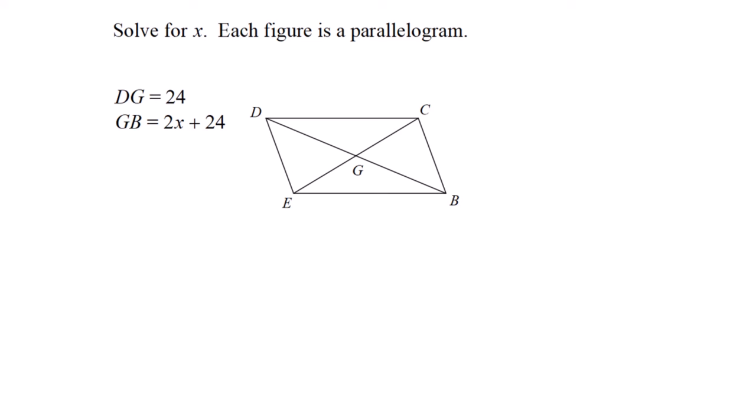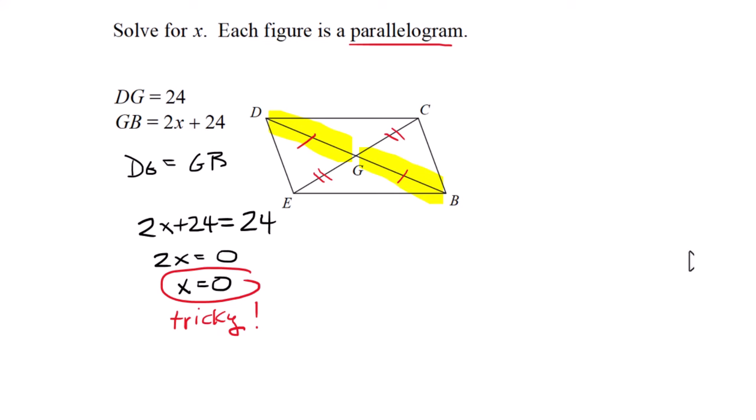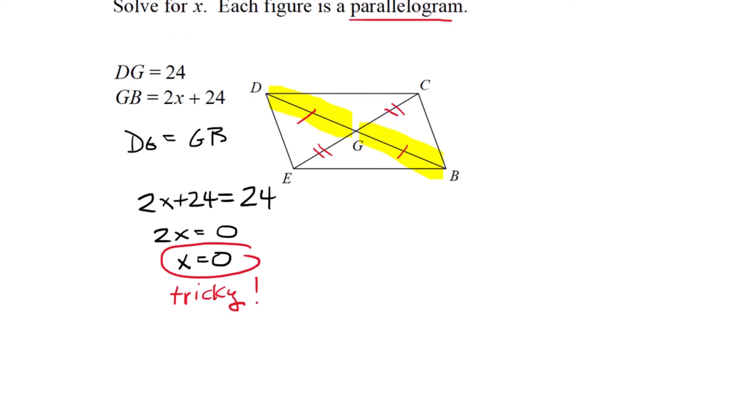In parallelograms, the diagonals bisect each other. They won't be the same length, but they cut each other in half. DG equals 24 and GB equals 2x plus 24. Since they're equal, 2x plus 24 equals 24. Subtract 24, 2x equals zero, x equals zero. It's tricky, but the math is correct.